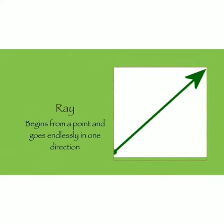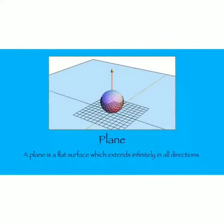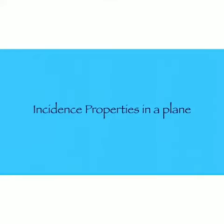A ray is a part of a line. Now we'll learn about a plane. A plane is a flat surface which extends infinitely in all directions. We'll learn about incidence properties in a plane. The first property is: if we have been given a point A, how many lines can be drawn passing through it?